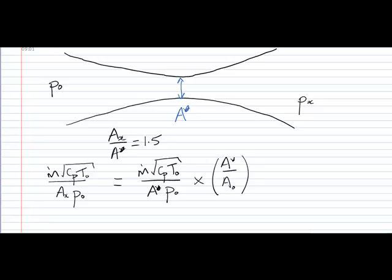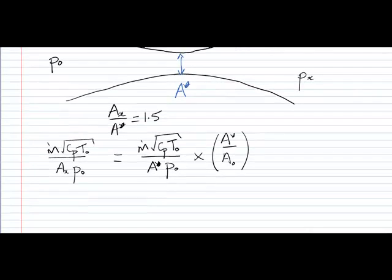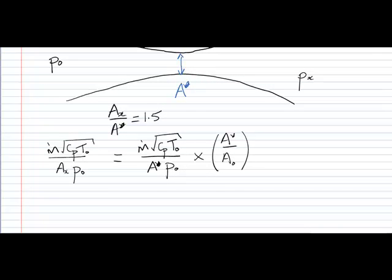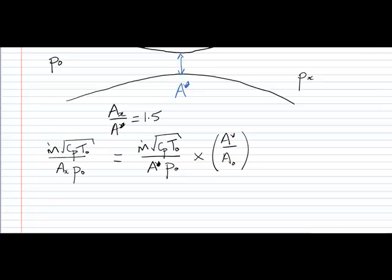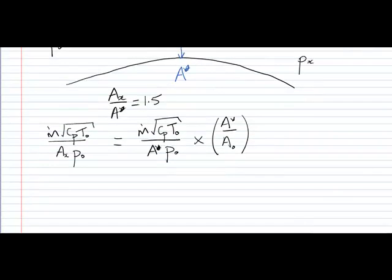So M dot root CP T0 over AX P0 is simply M dot root CP T0 over A star, the area at the throat P0 times the ratio of A star to A0